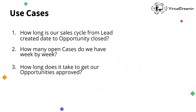Let's focus on three questions you might get asked by the business as use cases. Number one: how long is our sales cycle — from the date the lead has been created to the date the opportunity has been closed? Number two: how many open cases do we have week by week? And number three: how long does it take to get our opportunities approved? These are three KPIs we want to measure.